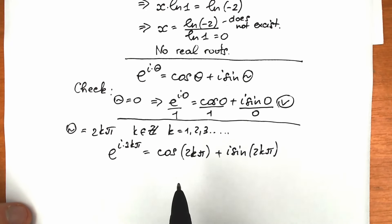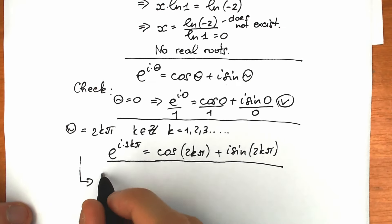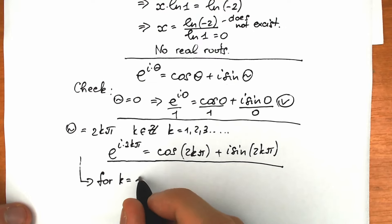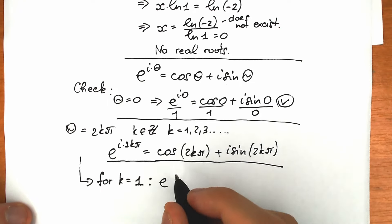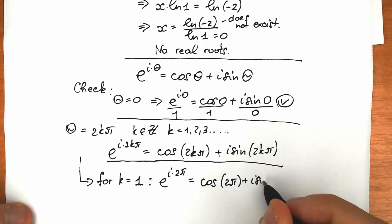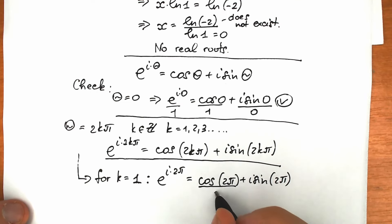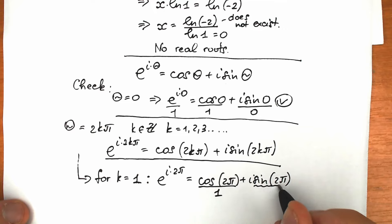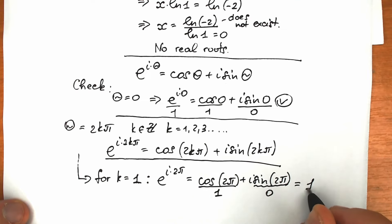The key moment is to see what happens for specific values of k. For k equal to 1: e to the power i times 2π equals cosine 2π plus i times sine 2π. Cosine 2π equals 1 and sine 2π equals 0, so we get 1 plus 0 equals 1. When k equals 1, this expression on the left side equals 1.